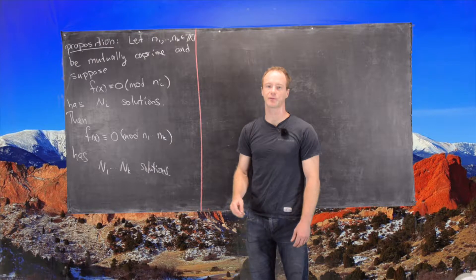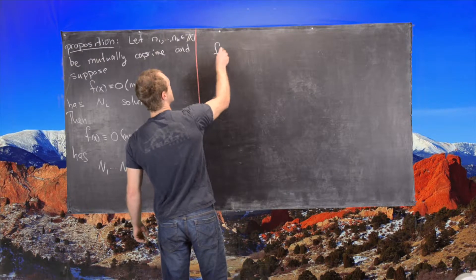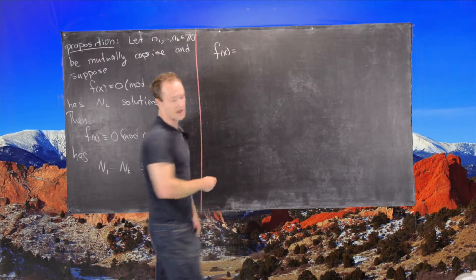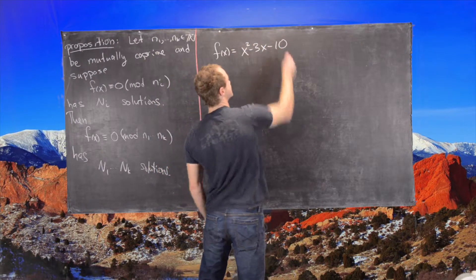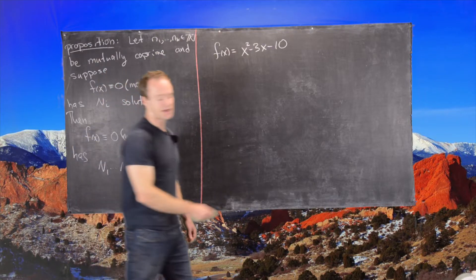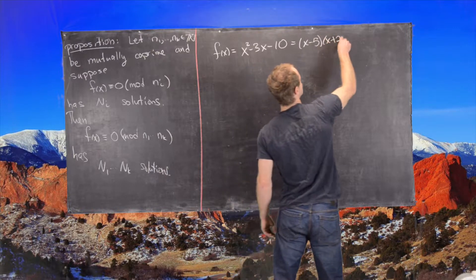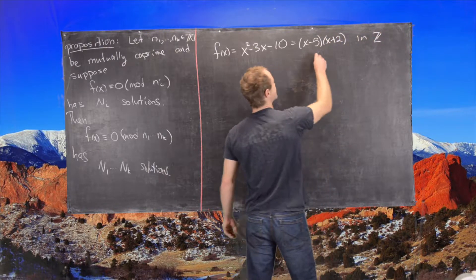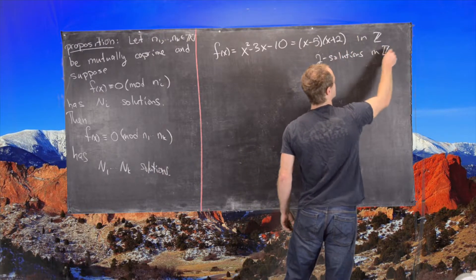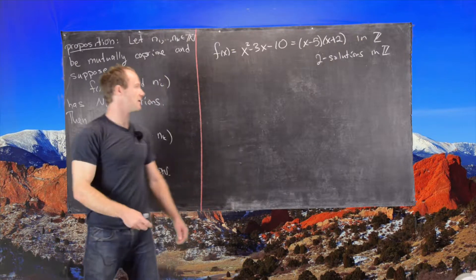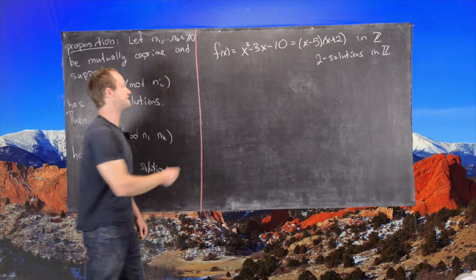Before we look at a proof, let's look at an example of this in action. Consider the polynomial f(x) = x² - 3x - 10. This factors as (x - 5)(x + 2) in ℤ, which means there are two solutions in ℤ. Now let's look at solutions in ℤ₂ and in ℤ₃.